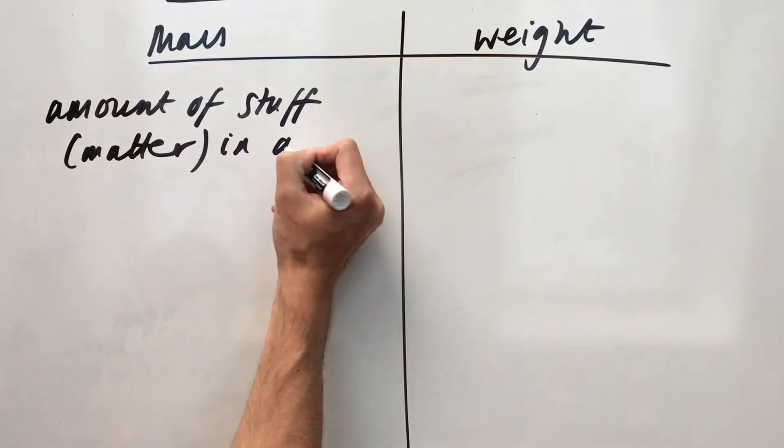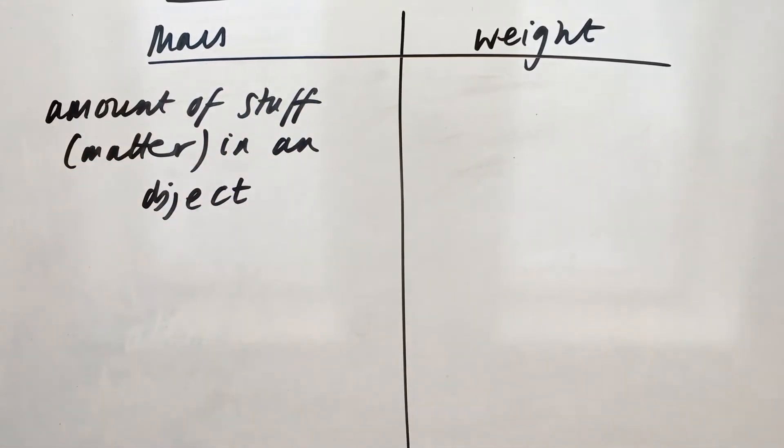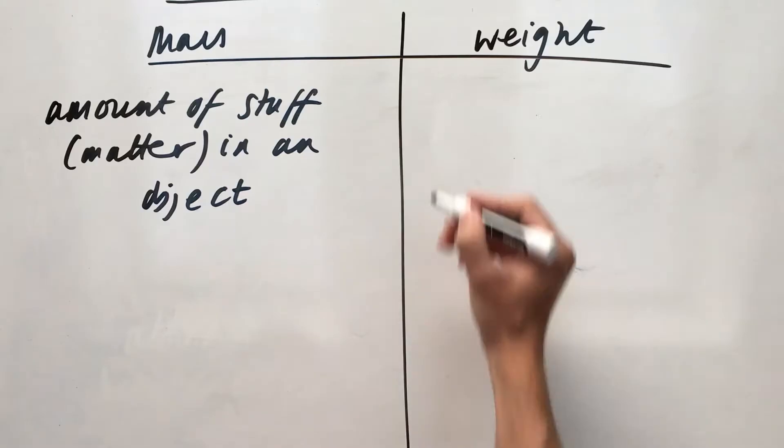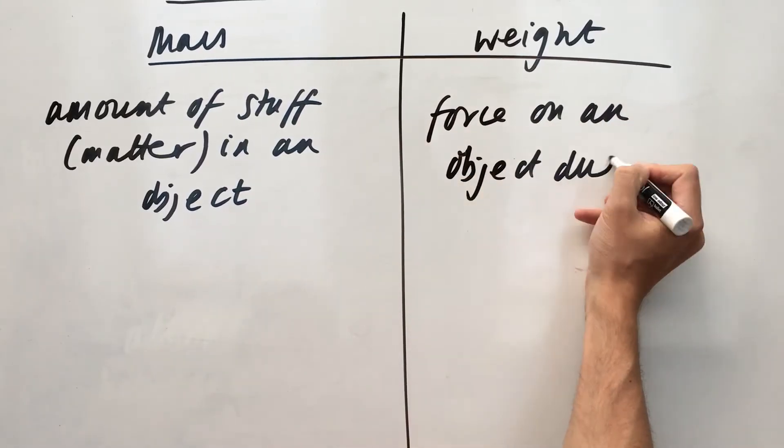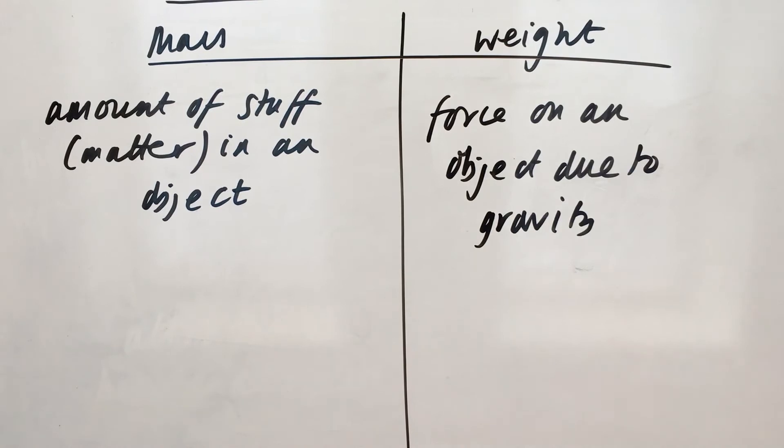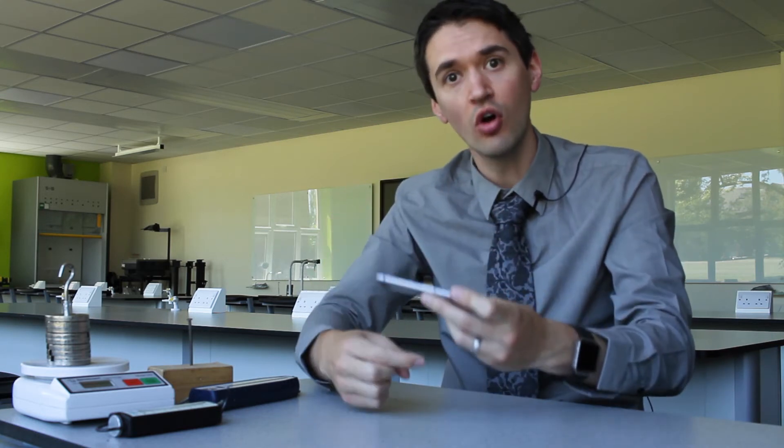Mass is the amount of matter, or stuff, in an object. Whereas weight is a force due to the pull of gravity on that object. So if I just pick a random object, like a phone, the mass of it is the amount of stuff in it, but the weight of it is the force of gravity acting down on that object.